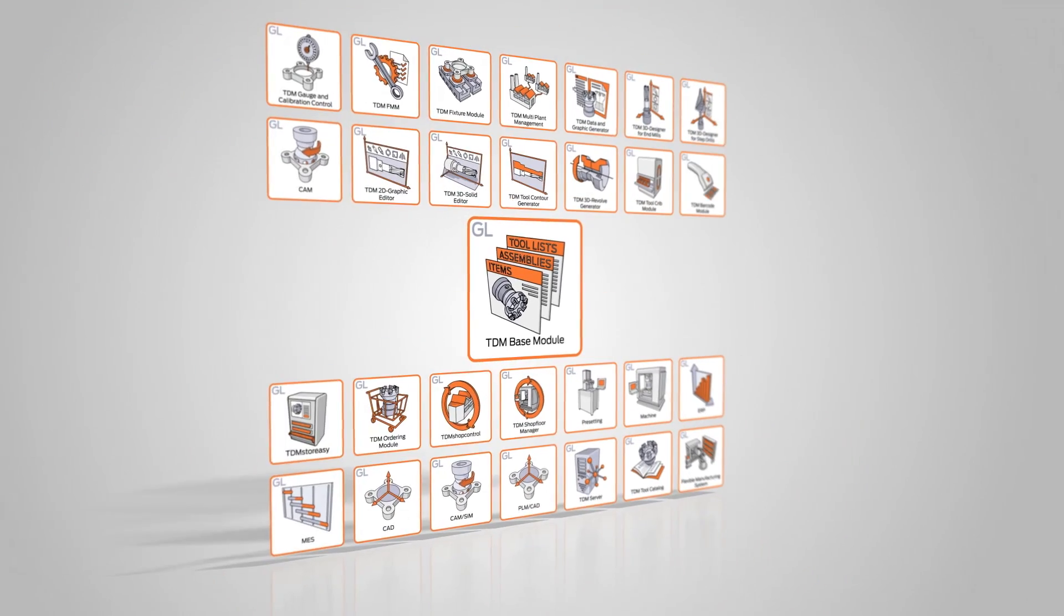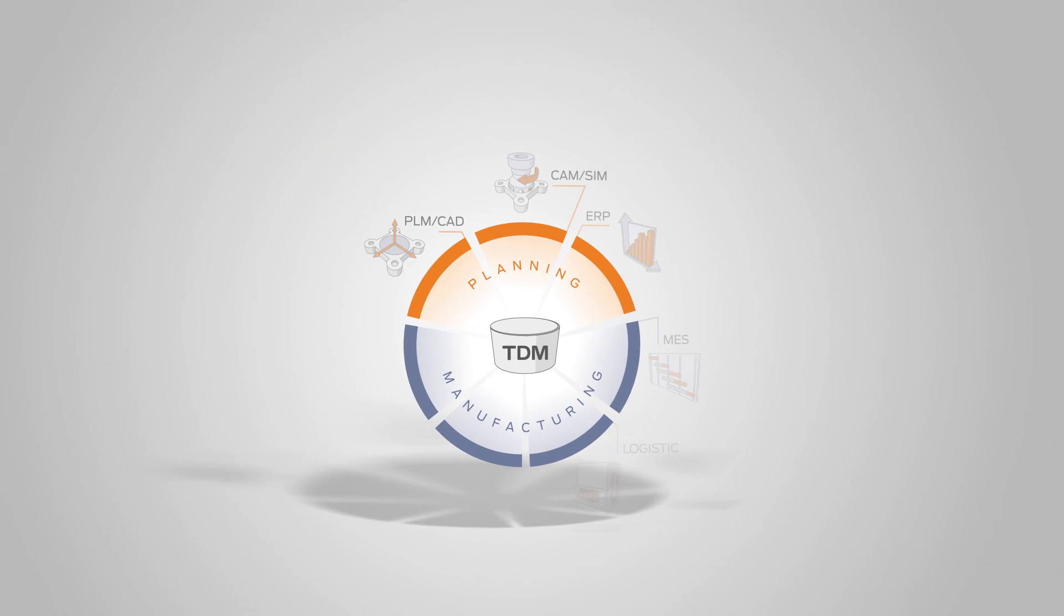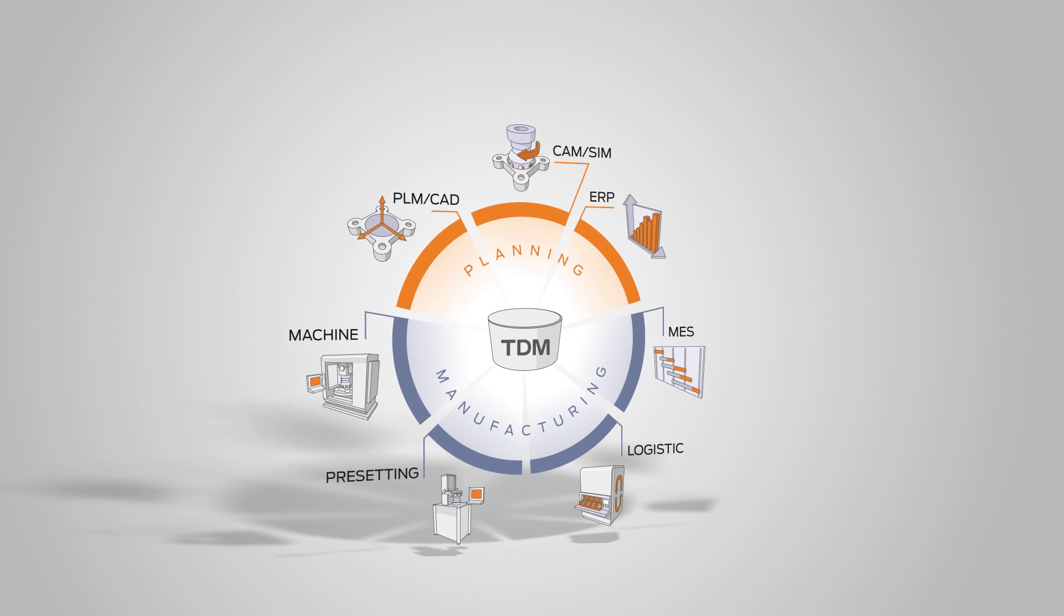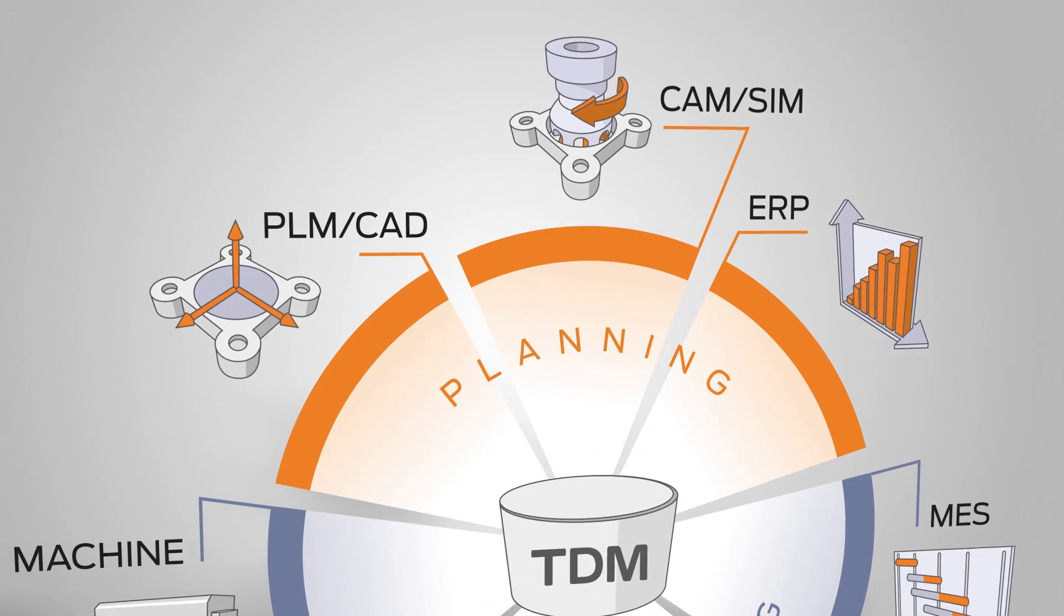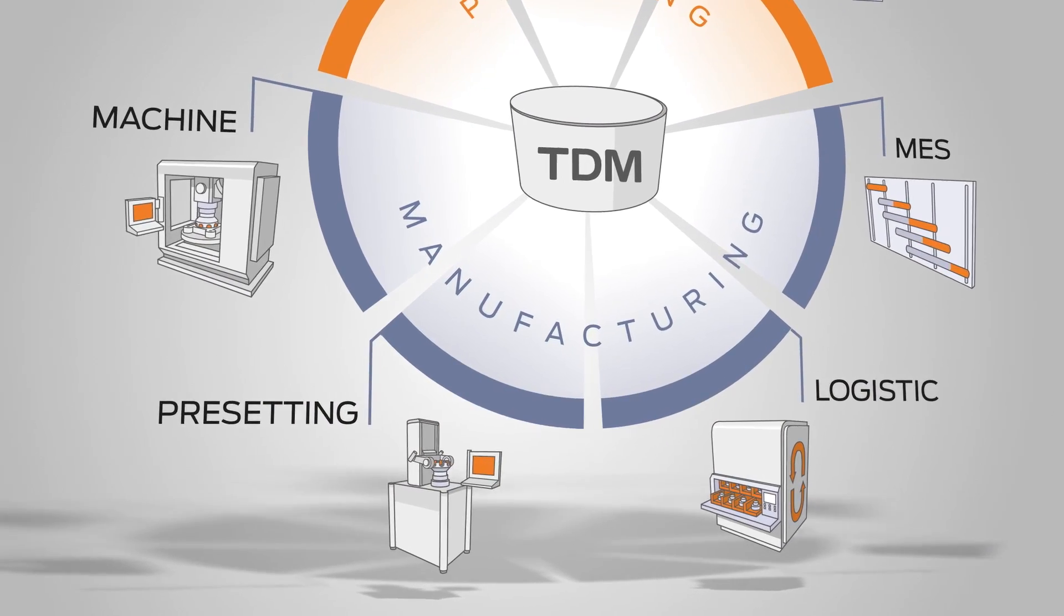With a large number of integrations and easy operation, TDM GlobalLine helps with process planning, enables you to control production orders, plan the required production resources, and control and supervise manufacturing facilities.